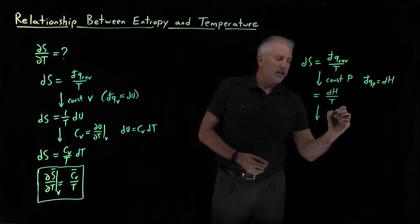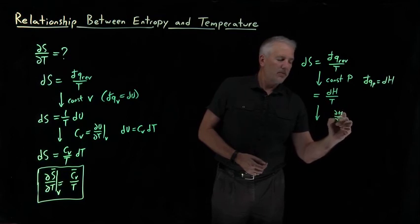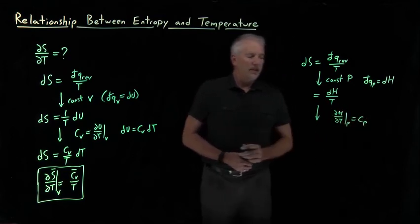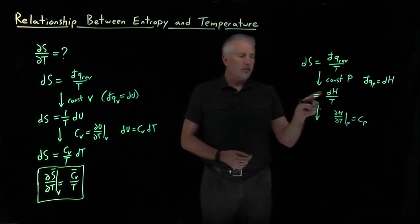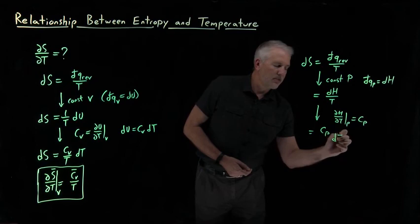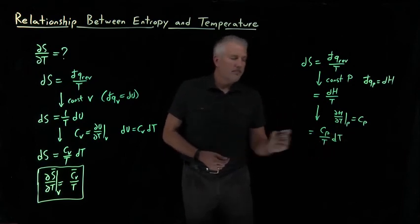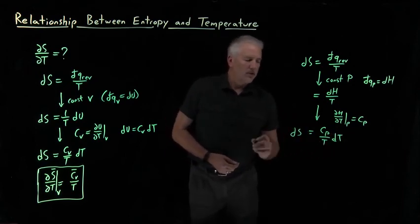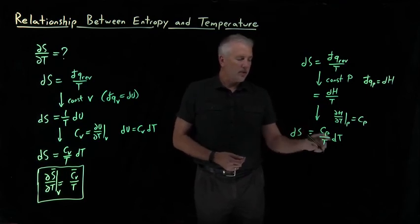In the next step, we would say the constant pressure heat capacity, cp, is dh dt. So I can write dh as cp times dt, all divided by temperature. So that would be the result. ds is cp over t dt.